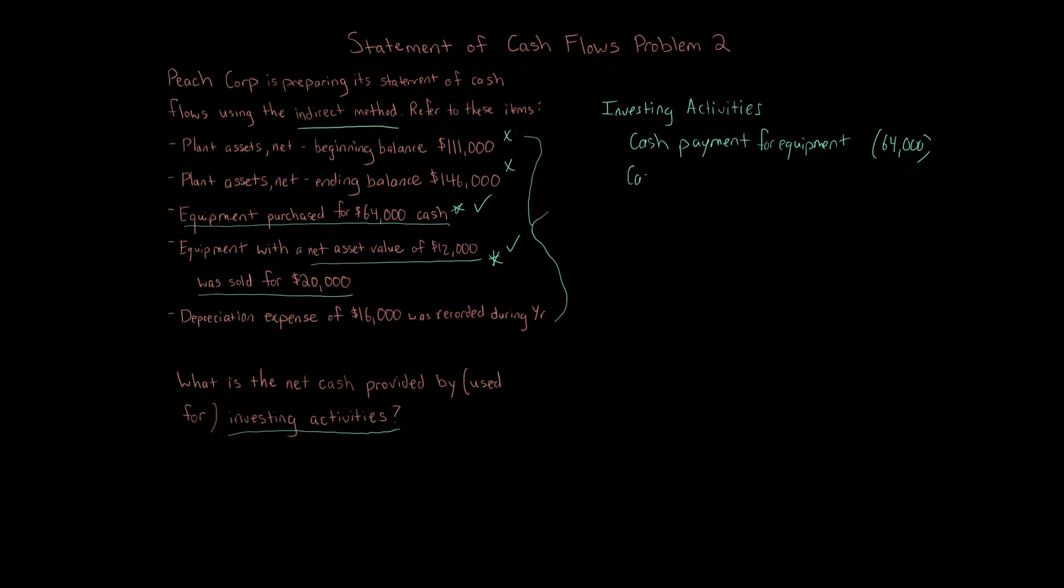Cash received from sale or from disposal, that's an increase, right? That's an inflow coming in of $20,000. Now, you might be wondering, well, then why don't we care about that $12,000 net asset value? Just like the plant asset beginning and ending balance, we do care about it, but we do so indirectly. How? We use the $20,000 it was sold for. And then remember, under operating activities, we would record the gain or loss on the transaction. See how that works? If we sell something on the books for $12,000 for $20,000, we have an $8,000 gain.